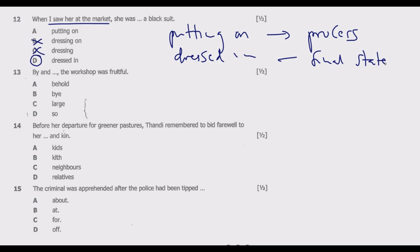Question thirteen: 'By and ___, the workshop was fruitful.' Options: A: behold, B: by, C: large, D: some. This is a common phrase used in day-to-day communication. It reads: 'By and large, the workshop was fruitful.' So C is the correct answer. This is something you should know.